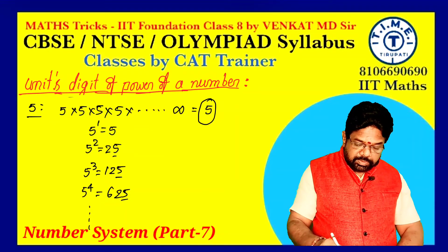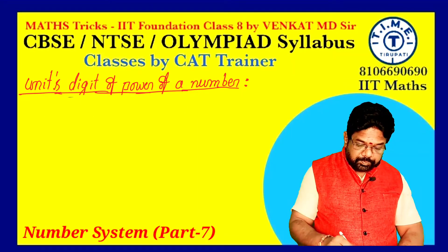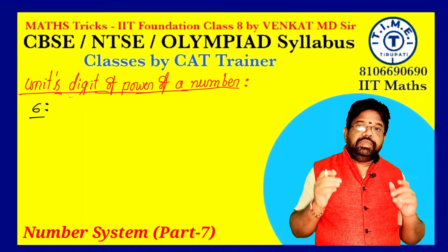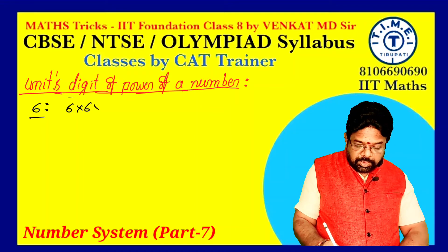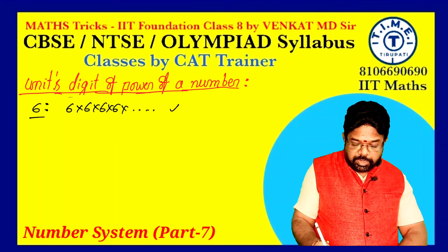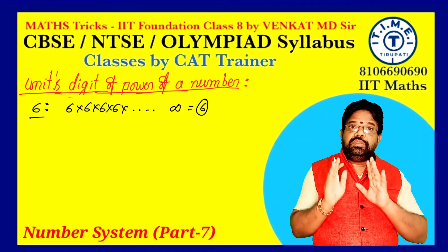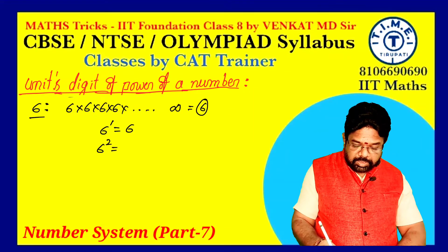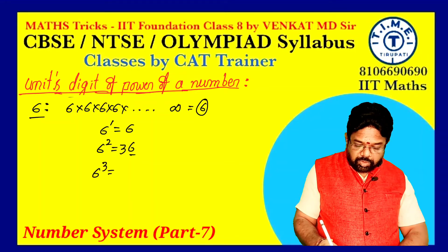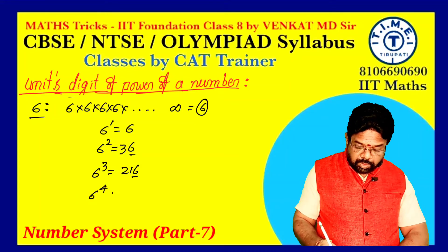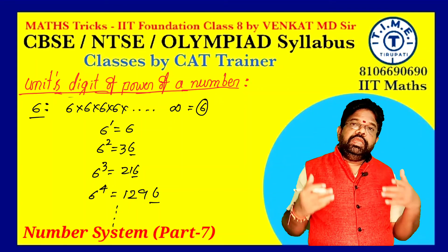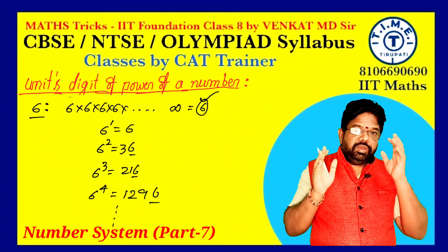Similarly for 6: 6^1 = 6, 6^2 = 36, 6^3 = 216, 6^4 = 1296 — unit digit is always 6. So 6 raised to any power — whether odd or even — always gives unit digit 6. This is an important concept for higher-level competitive examinations and is part of the 8th class IIT syllabus.